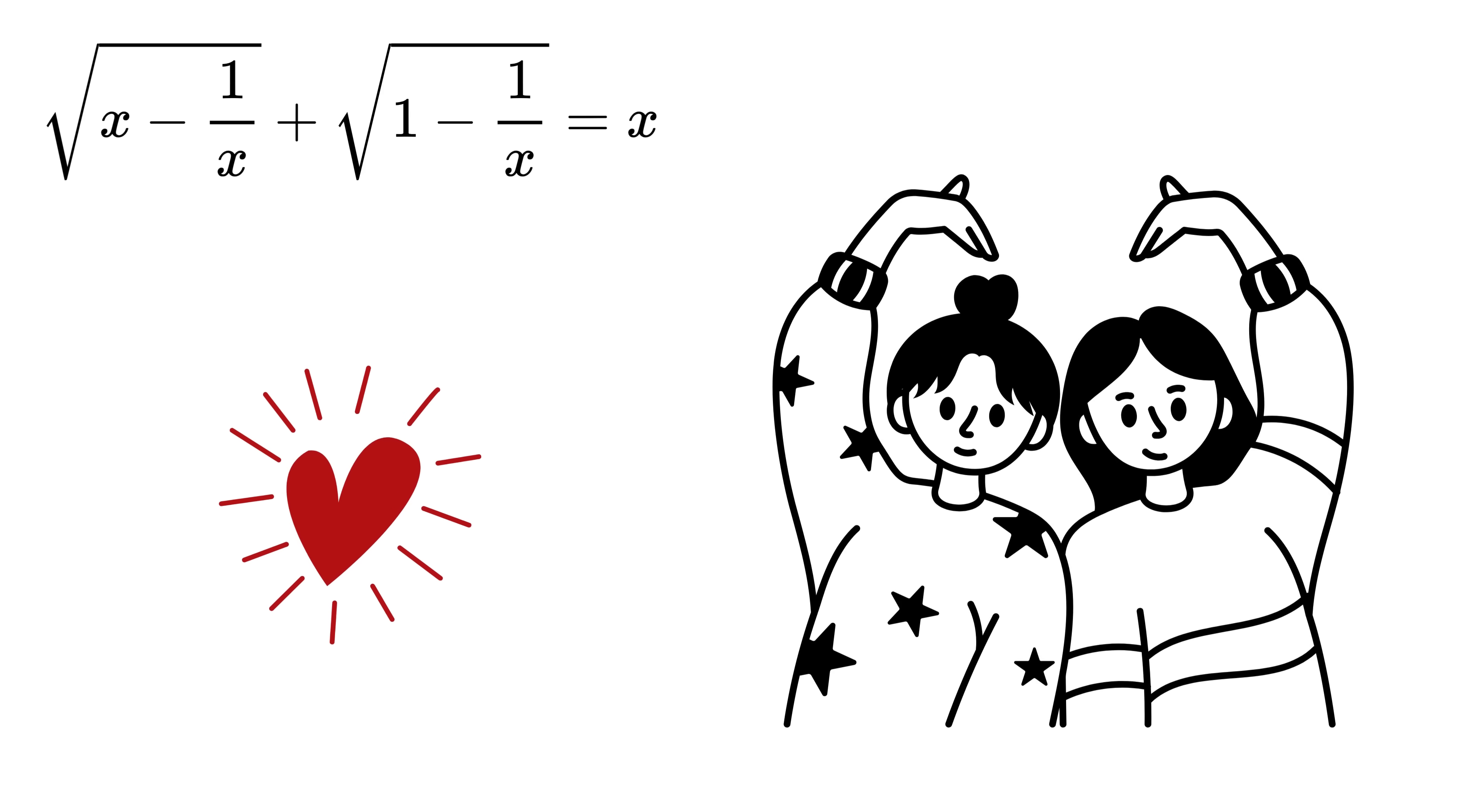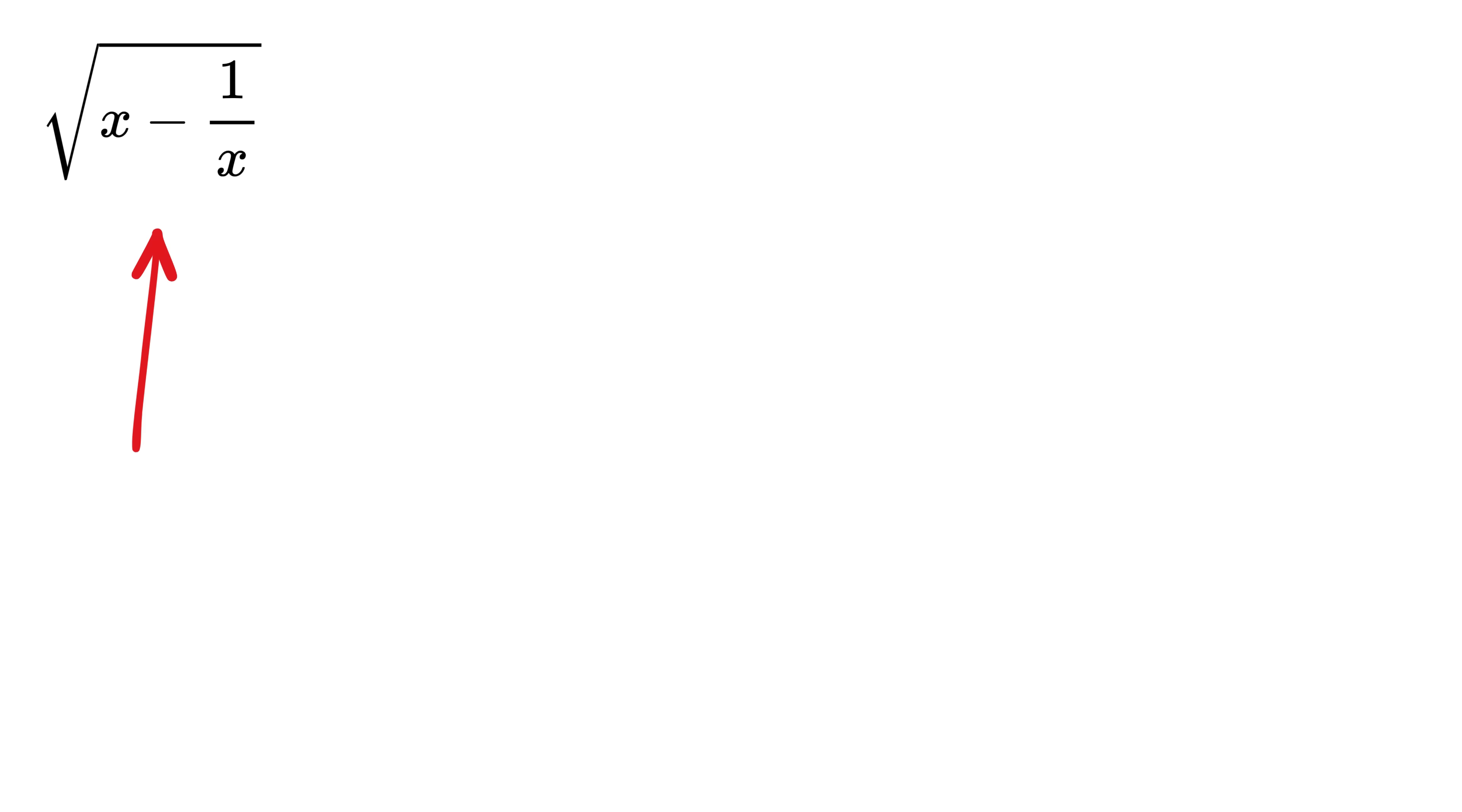I am in love with this question. We are given the square root of x minus 1 over x plus the square root of 1 minus 1 over x is equal to x, and our job is to find all the real values of x.